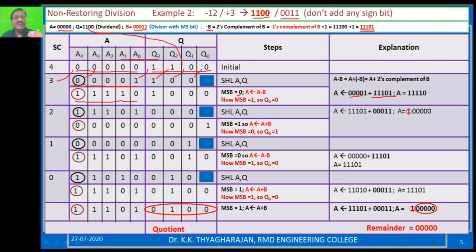Now what about Q? Q bits shift over as they are. But the rightmost position is blank. We have to decide whether it is 0 or 1. To decide, we check the MSB of A. Since MSB is 1, you put Q0 equal to 0 — the complement of this 1. So you put 0 here.